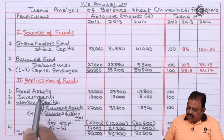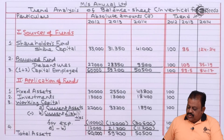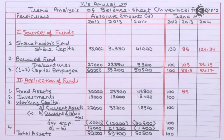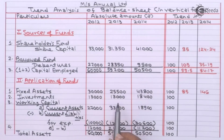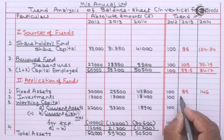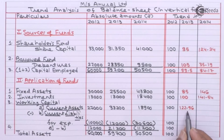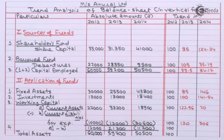For the application of funds: fixed assets base is 30,000, 2013 is 25,500 giving 85 percent, and 2014 is 43,800 giving 146 percent. For investments, 2013 is the same 13,000 so the trend is 100, and 2014 is 141.54 percent. For current assets, 2013 is 122.96 percent and 2014 is 70 percent. For current liabilities, 2013 is 120 and 2014 is 306 percent.